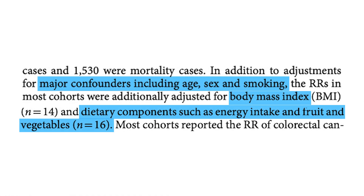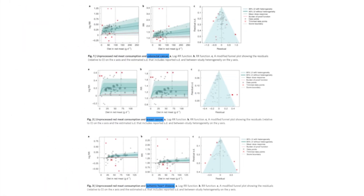They also controlled for various lifestyle factors like smoking, BMI, and other things, which is really important because people who tend to eat more red meat actually tend to smoke more, exercise less, and have lower fruit and vegetable consumption. In this study, they found weak associations of red meat with breast cancer, colon cancer, and type 2 diabetes, and they found no association for ischemic heart disease and no risk of hemorrhagic stroke.